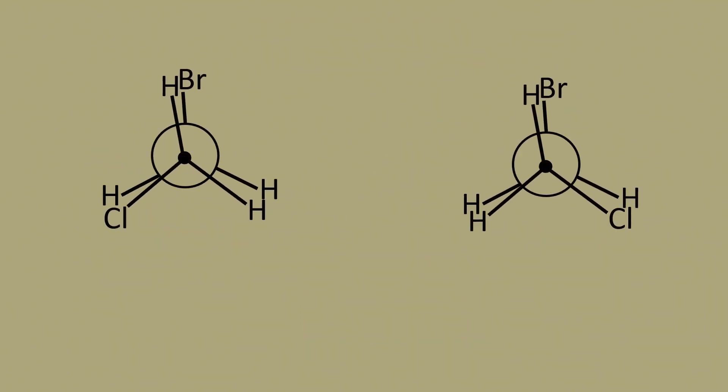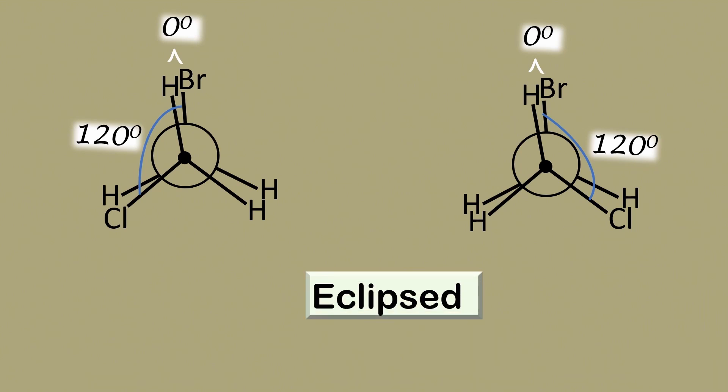Further rotation achieves an eclipsed conformer, in which the heavy groups are at 120 degrees apart. In this conformer, the molecule is less stable than in the previous two, because there is increased repulsion between electron densities, on the atoms and also in the bonds.